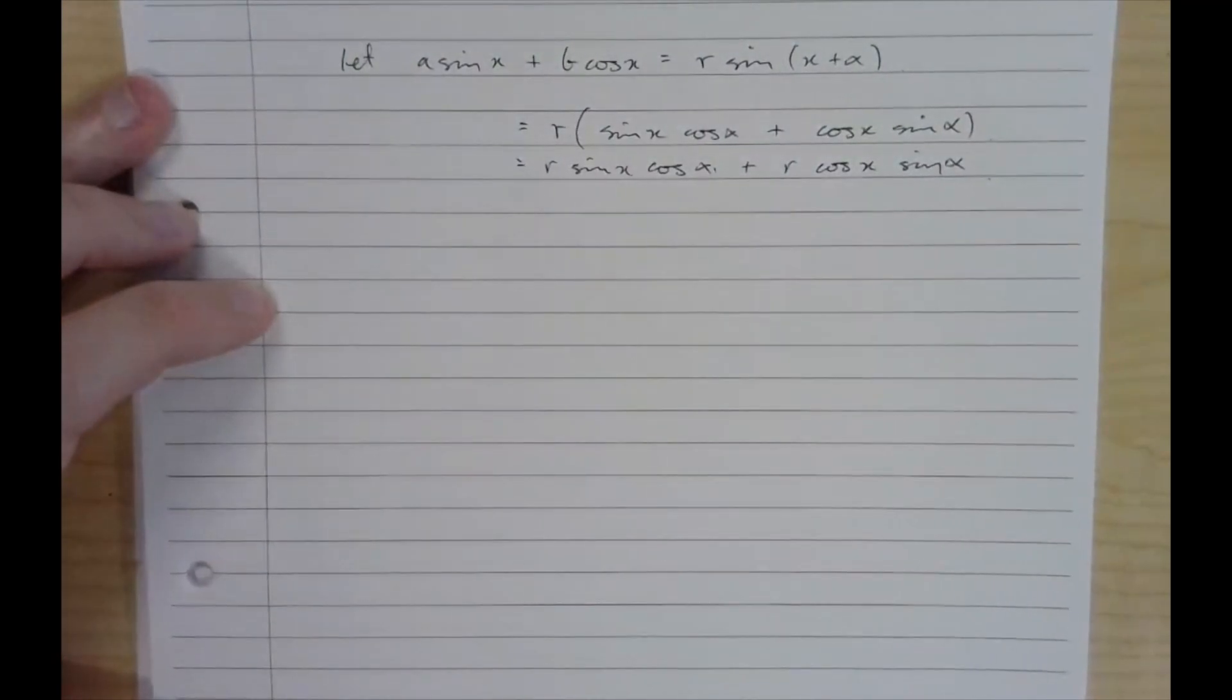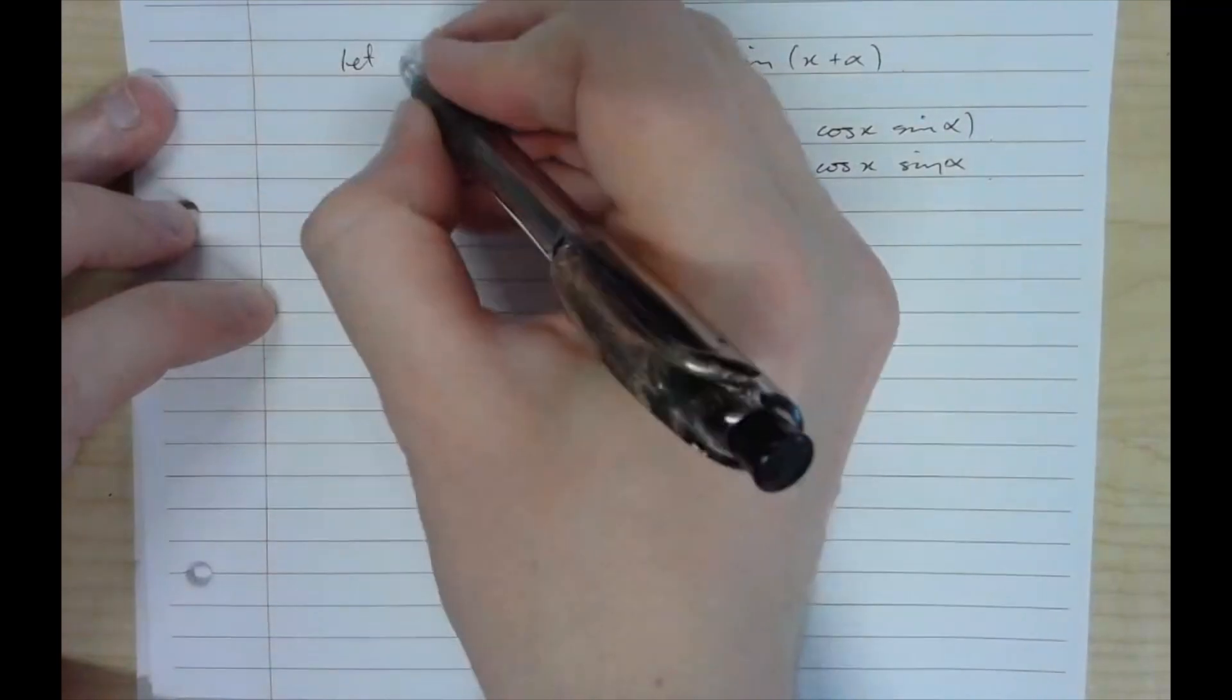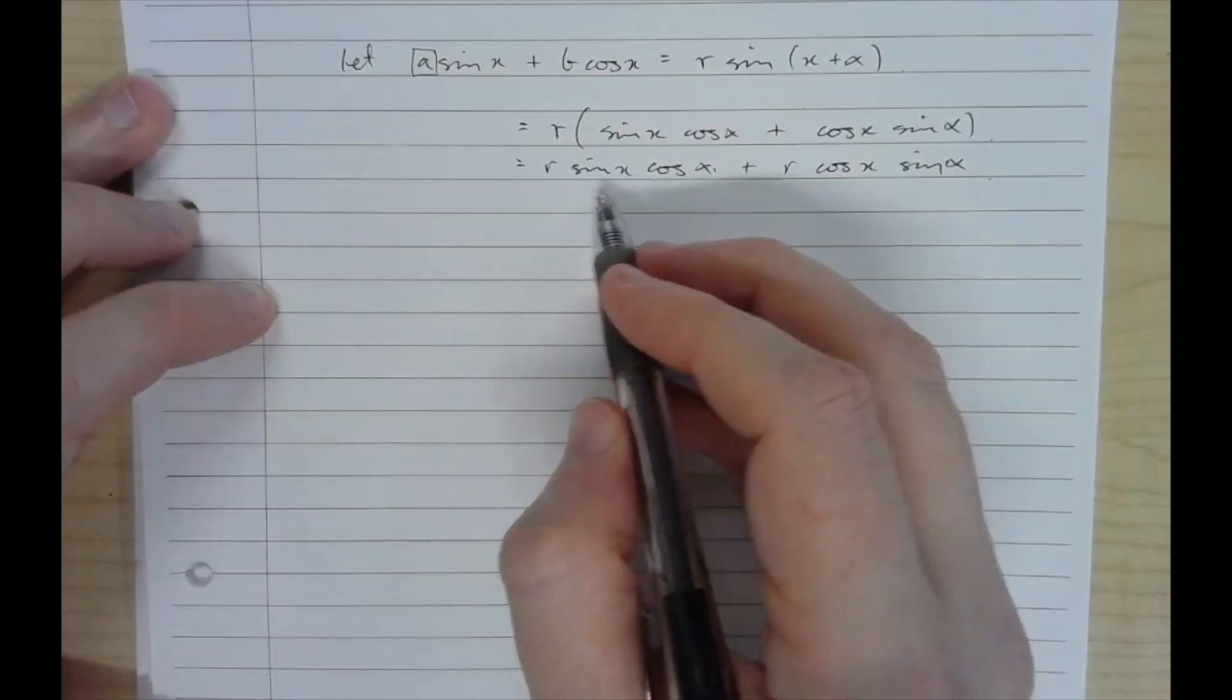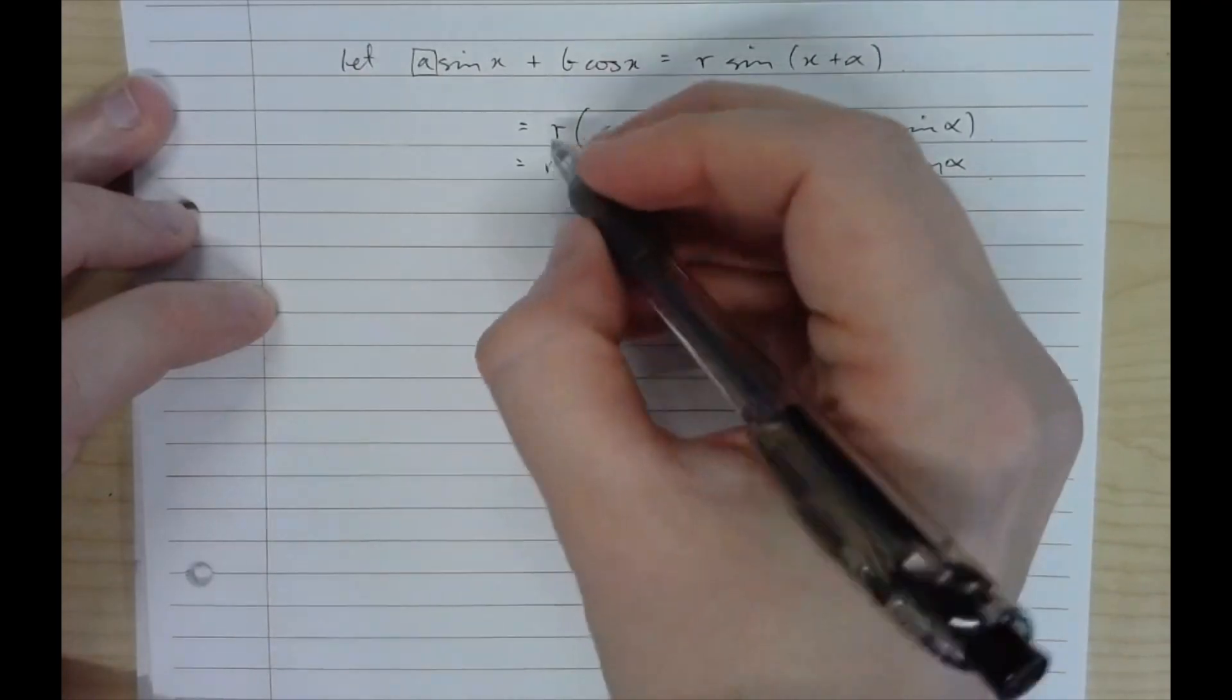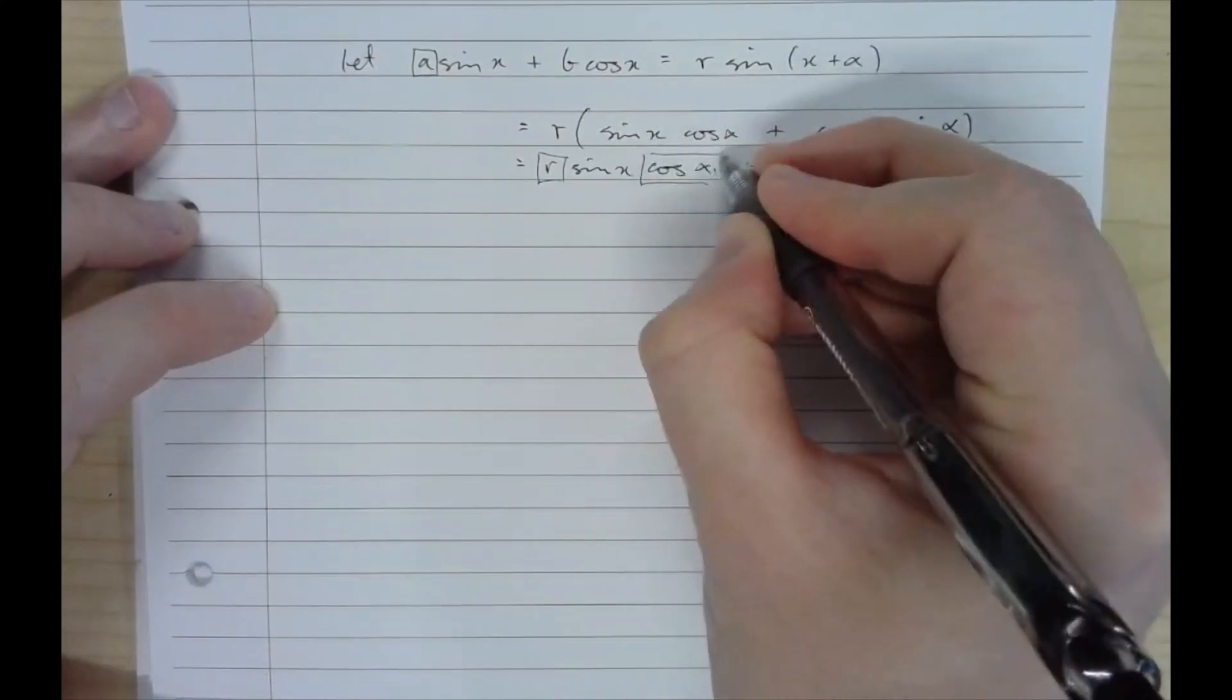Pretty straightforward. All we do here is we equate the coefficients. On my left hand side the coefficient of sine x is A and on my right hand side the coefficient of sine x is R cos alpha.